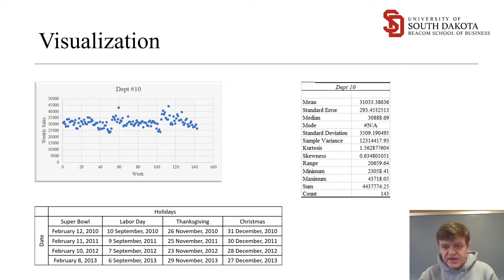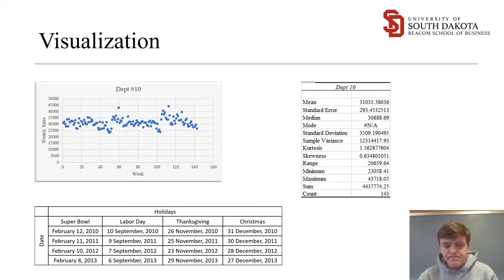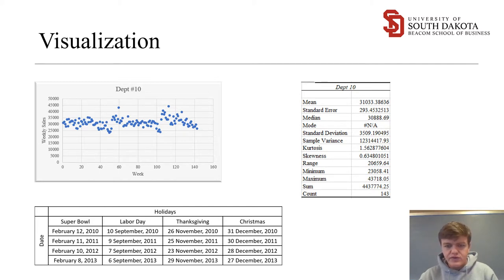Right next to that scatter plot is a table of central tendencies — one was recorded for each department I analyzed, just to get a baseline understanding of the data I was working with. At the bottom is a table signifying the holidays that Walmart recognizes. Kaggle specifically drew out the Super Bowl, Thanksgiving, and Christmas, along with the dates for the four years the data covered. I included that as a reference point to gauge against the seasonal highs I was seeing.